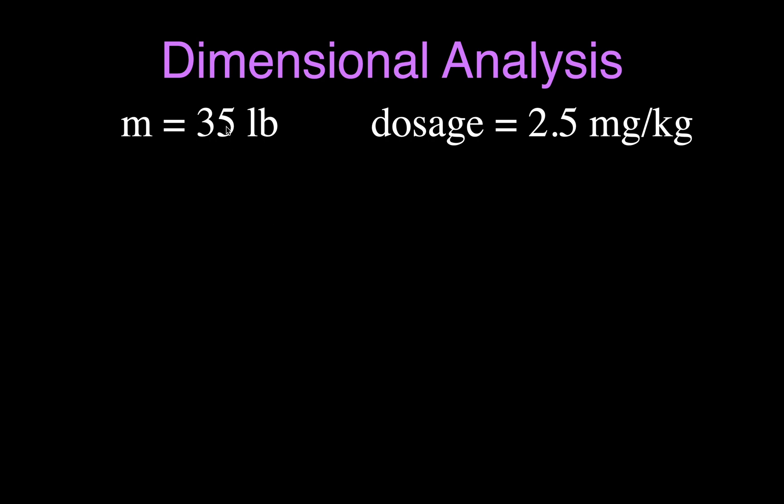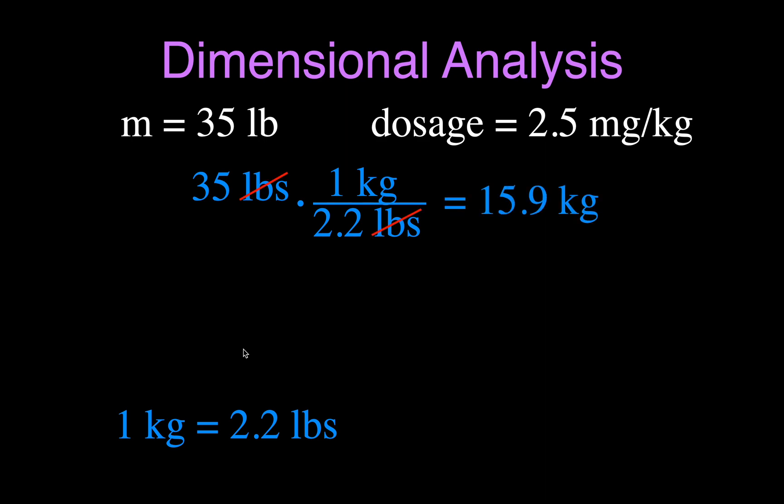Now we want to do one we might use in a medical setting. Let's say we have a patient, like a child or a patient, who weighs 35 pounds. They have a medicine, and they're supposed to receive 2.5 milligrams per kilogram. This is the weight, 35 pounds, and this is the dosage, 2.5 milligrams per kilogram. Now, you can see here, we have a weight in pounds, and we have a mass in kilograms. So, we got to first convert the pounds into kilograms, and one kilogram is 2.2 pounds approximately. So, we put that in for our conversion, and we get that is 15.9 kilograms.